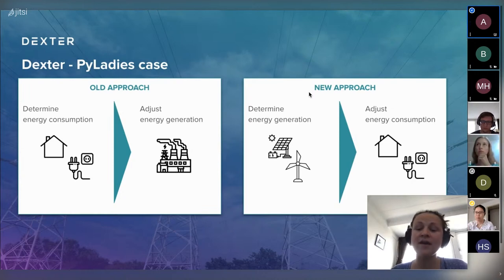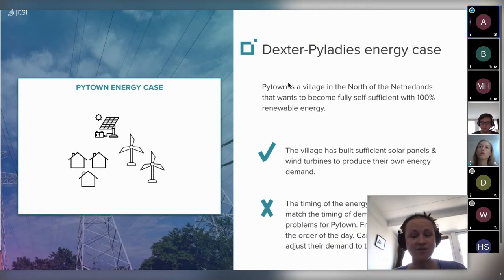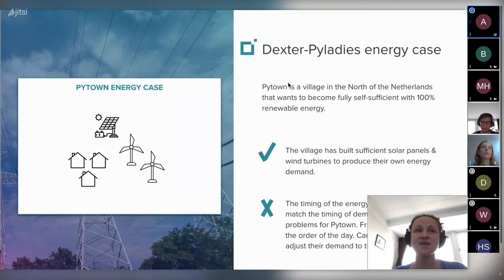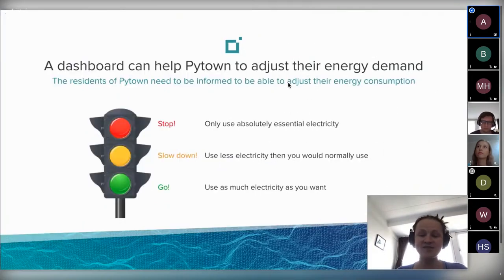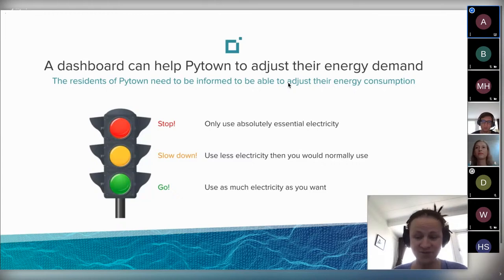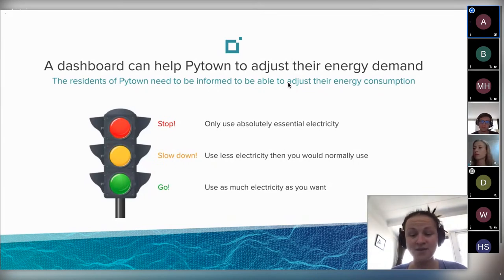Our new approach is to adjust energy consumption to ensure that the available electricity is enough. We worked with Pijattown, located in the north of the Netherlands — a self-sufficient town that cut off from the electricity grid some time ago, using only alternative energy sources. However, Pijattown has a lot of blackouts when people return from work and start charging their devices.